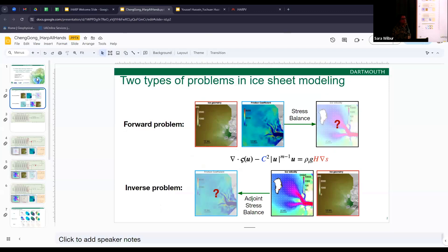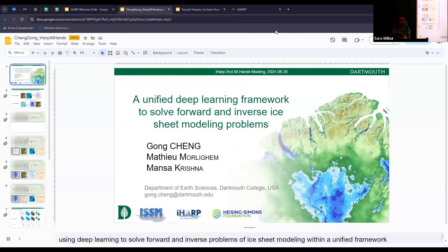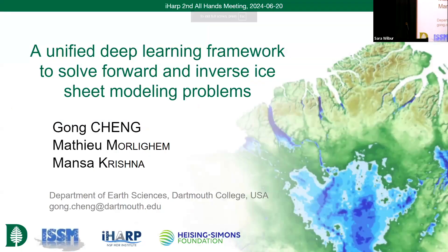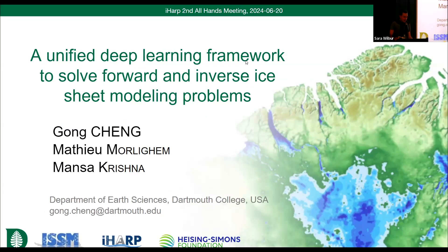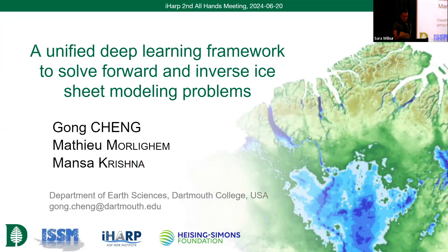Let's get back and get started. Matthew, Dr. Morlighem, is going to be the session chair for the next one. Alright, I hope everybody enjoyed their lunch. We'll continue with three more spotlight talks — same format: 15 minutes, 10 minutes presentation, five minutes questions. The first one is from Cheng Gong from Dartmouth, presenting a unified deep learning framework to solve forward and inverse ice sheet modeling problems.